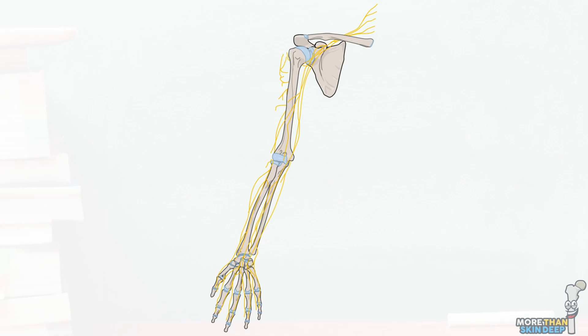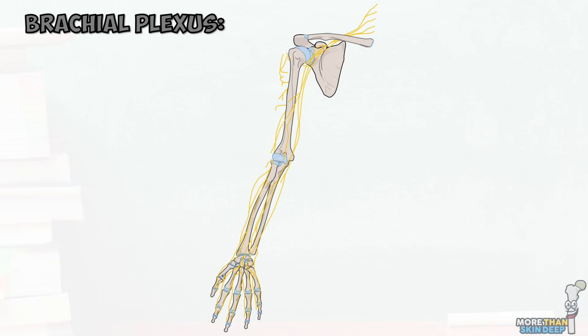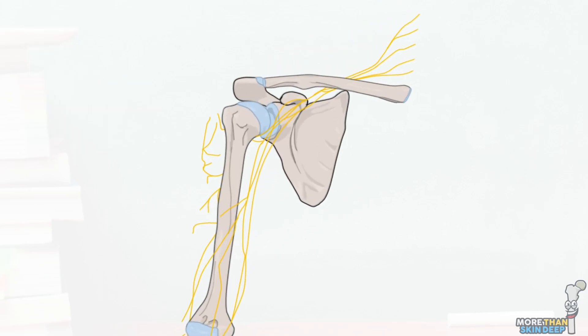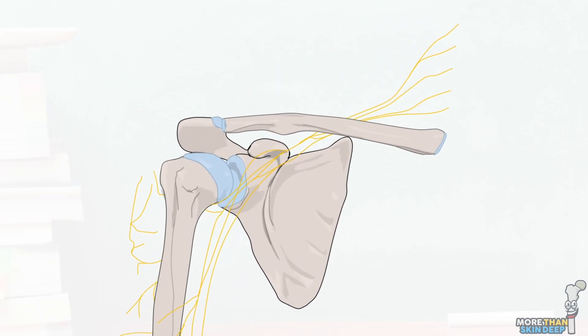We've already covered the anatomy of the axillary and musculocutaneous nerves, so today we'll be looking at the radial nerve. The radial nerve is a bit like the posterior counterpart of the musculocutaneous nerve and supplies most of the muscles that extend the upper limb at the elbow and wrist joints, as well as a large portion of the sensation to the posterior upper limb.